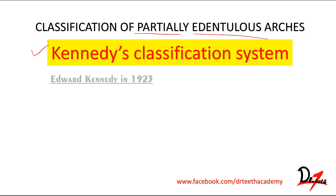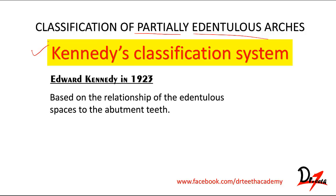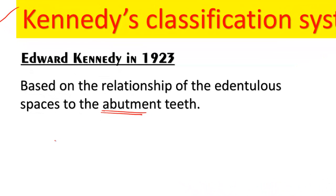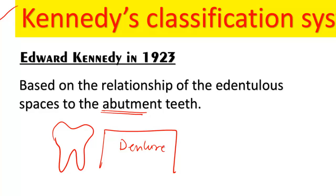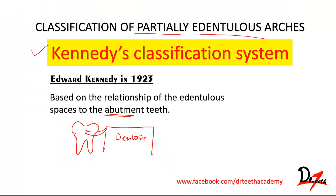Kennedy's classification was given by Edward Kennedy in 1923. It is based on the relationship of the edentulous spaces to the abutment teeth. Abutment teeth are any teeth used for supporting your denture. For example, if this is a denture, it will take support from this tooth and this tooth — so these are our abutment teeth.